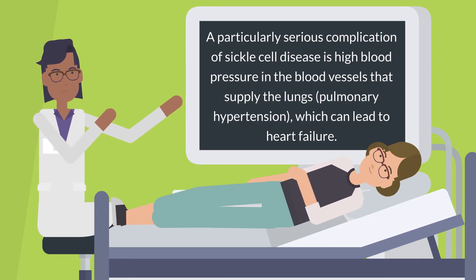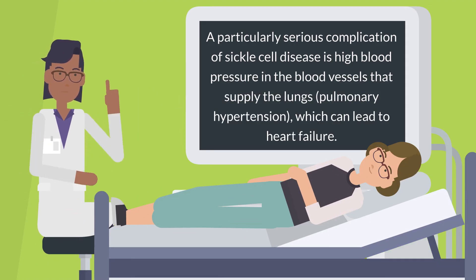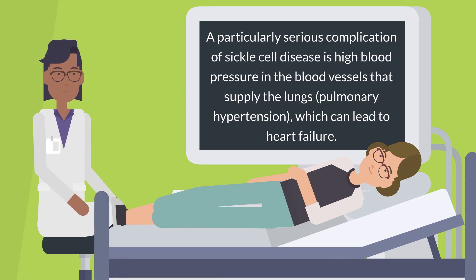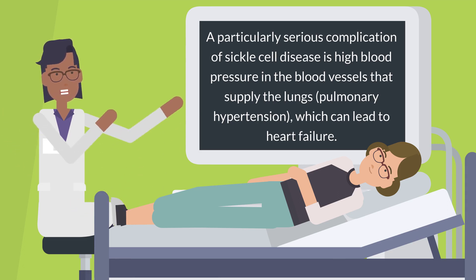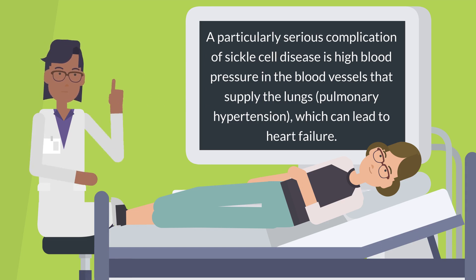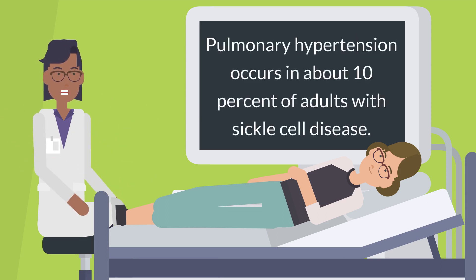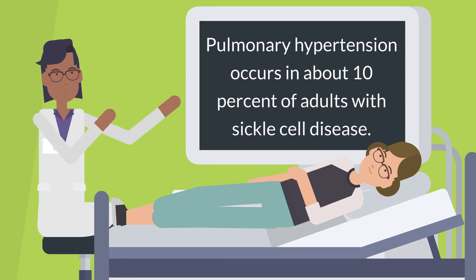A particularly serious complication of sickle cell disease is high blood pressure in the blood vessels that supply the lungs, known as pulmonary hypertension, which can lead to heart failure. Pulmonary hypertension occurs in about 10% of adults with sickle cell disease.